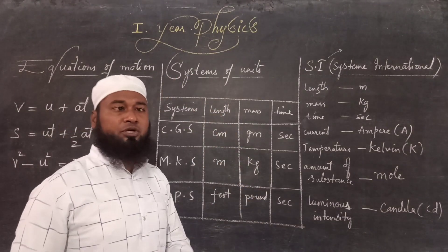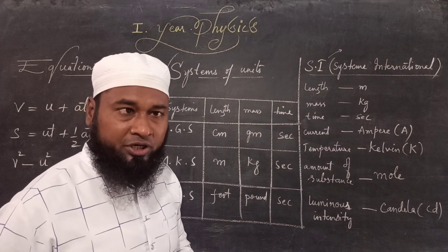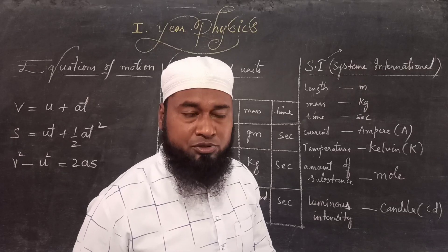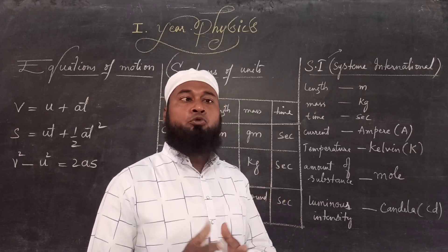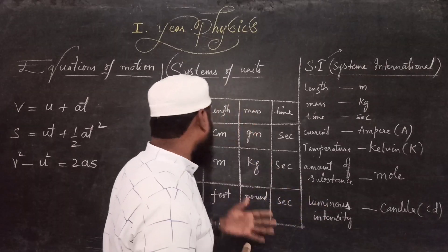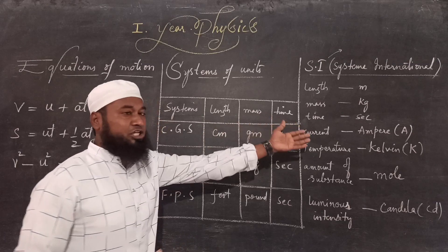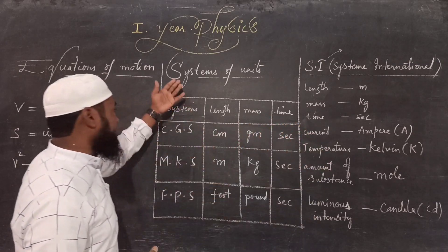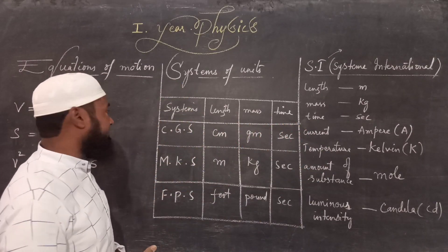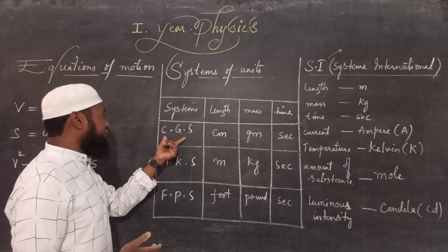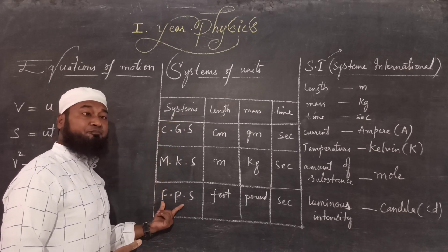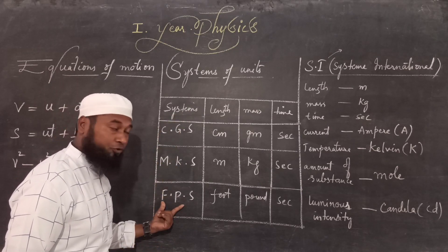Coming to systems of units — very, very important. In physics, you have to solve numerical problems and attach units to numbers. There are two main tables. Three systems of units are given: CGS system of units, MKS system of units, and FPS system of units.